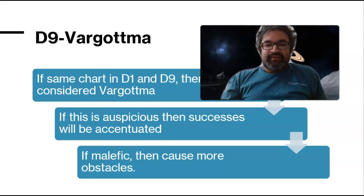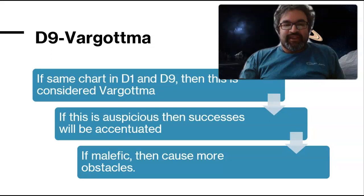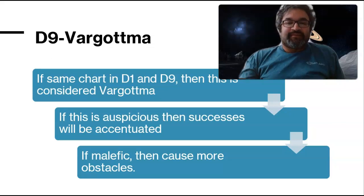Here I'm talking about the ninth harmonic, or the divisional ninth chart — the navamsa — in addition to the main birth chart. One important thing to remember is that if a planet is in the same house in the main chart as in the divisional ninth chart, it is known as vargottama, which means an increase in the power of that sign and combination.